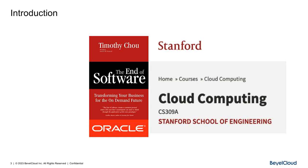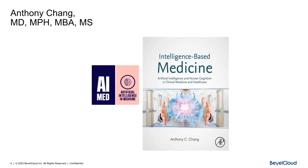I'm sitting there waiting and he shows up. I think, this doesn't look like a regular student. Turns out he has an MD, MPH, and MBA, and he is chief of pediatric cardiology at Children's Hospital in Orange County. Some of you may have run across Anthony Chang — he came back to Stanford in his mid-50s to get a bioinformatics degree.